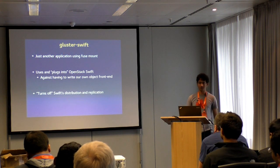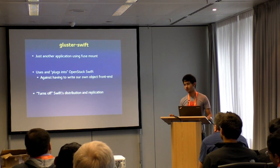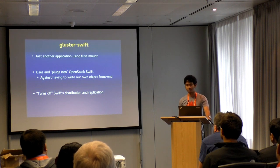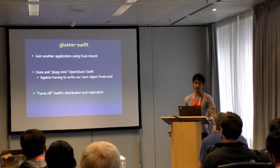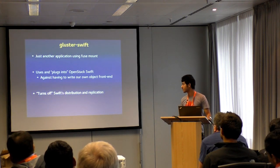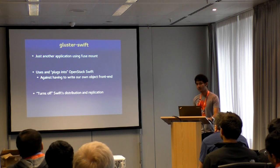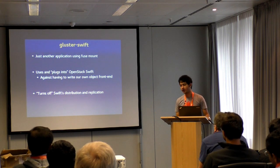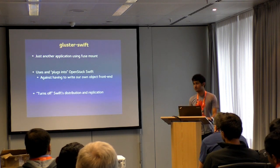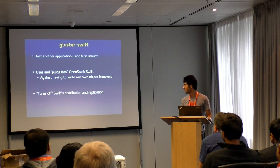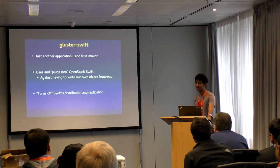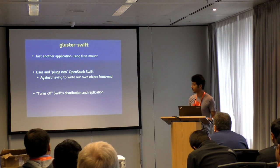Gluster Swift is a very thin layer that integrates Gluster with OpenStack Swift — there's nothing fancy going on. It's just another application that talks to a GlusterFS FUSE mount. It's largely external to Gluster; there's barely any code inside Gluster that needs special handling for the Swift use case. It reuses a lot of OpenStack Swift code and plugs into it. The alternative would be to have our own object front end, and as you've seen, Swift can do its own distribution and replication, but we just turn that off and use Swift as a front end to provide object access.